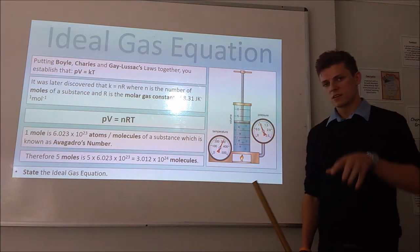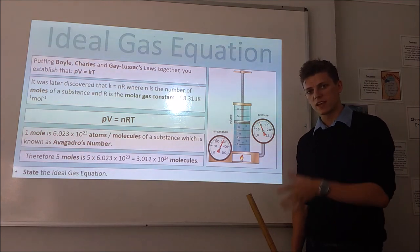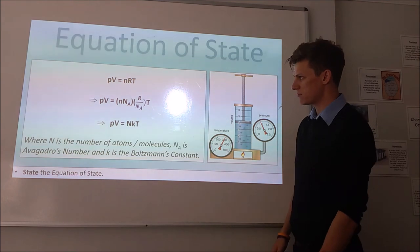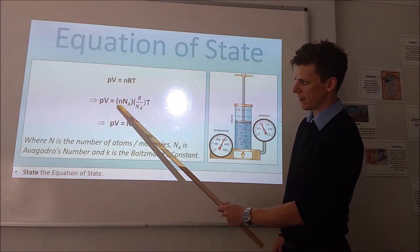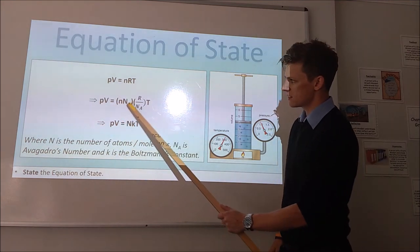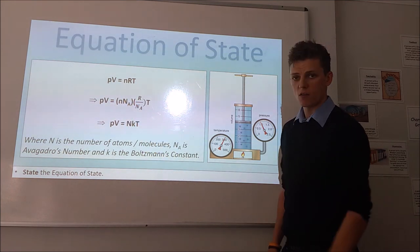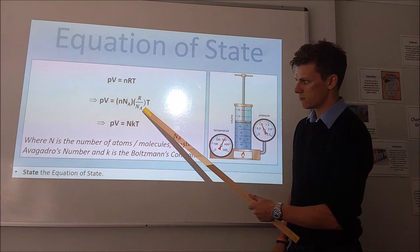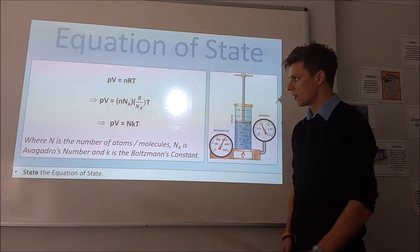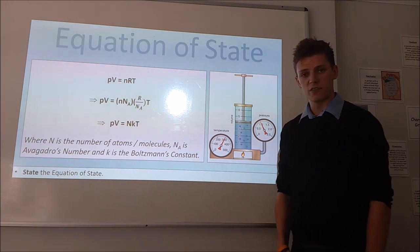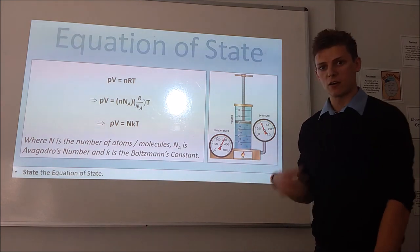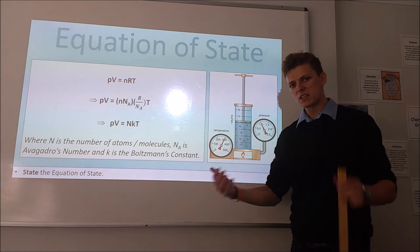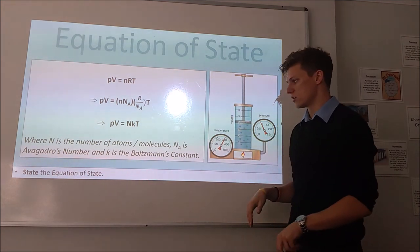Closely related to the ideal gas equation is the equation of state. We multiply n by Avogadro's number so that term becomes simply the total number of atoms N of the substance. To keep the equation balanced we divide R by Avogadro's number, which gives the Boltzmann constant k. So the equation of state is PV = NkT, where N is the number of atoms or molecules. Depending on what information you're given, you choose which of these two equations to use.